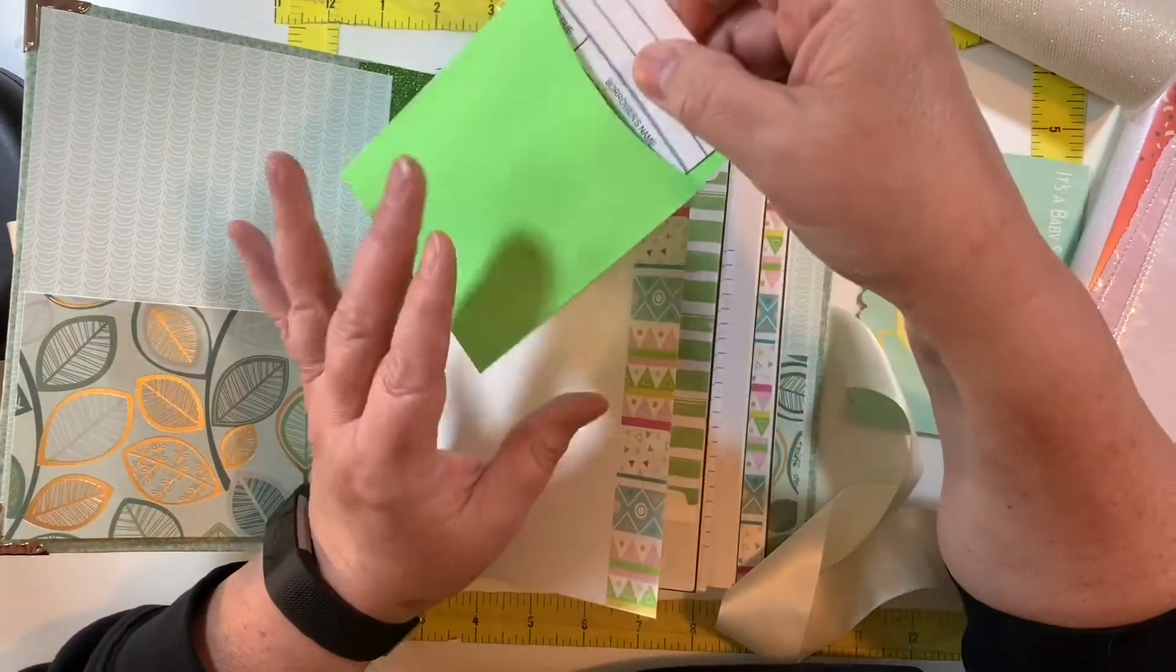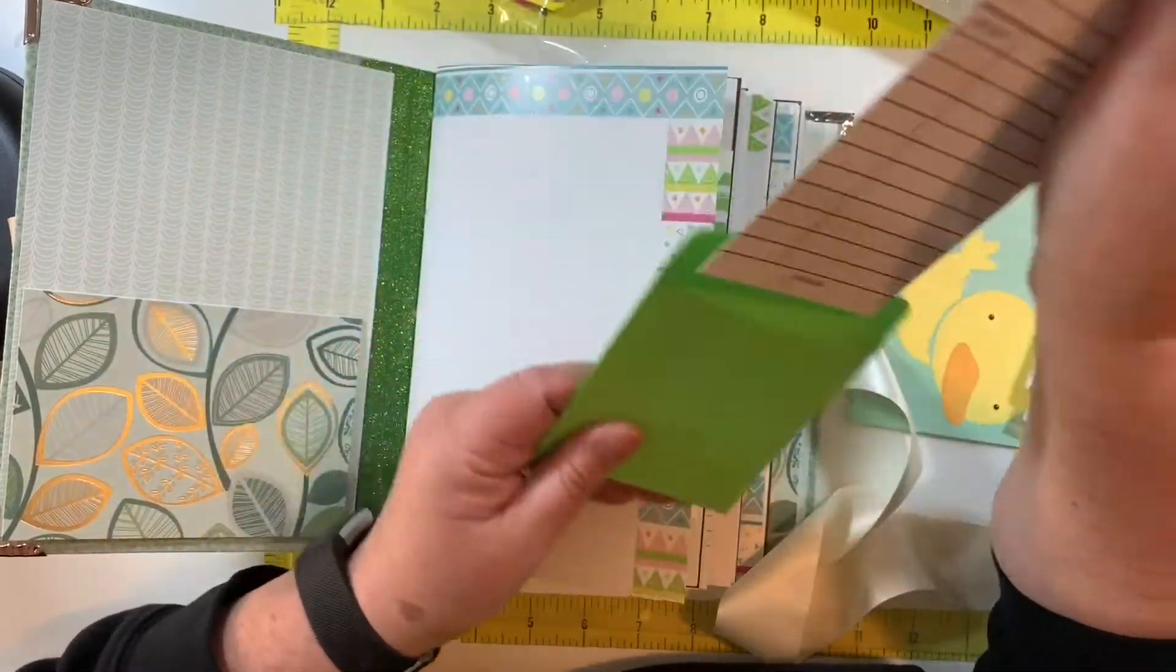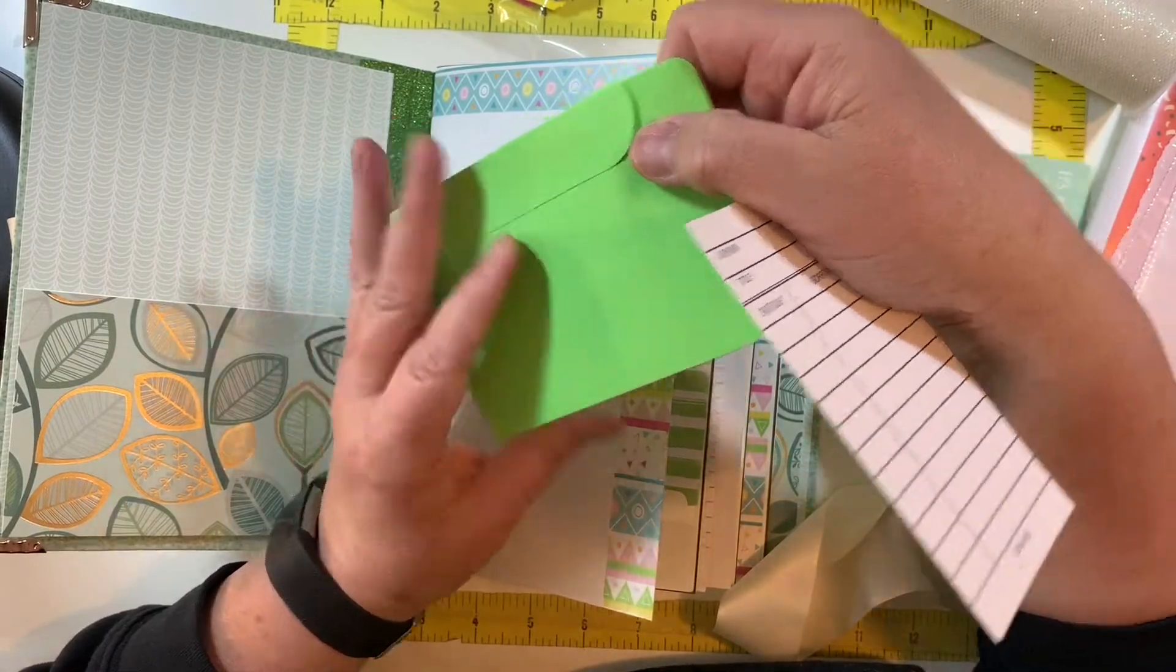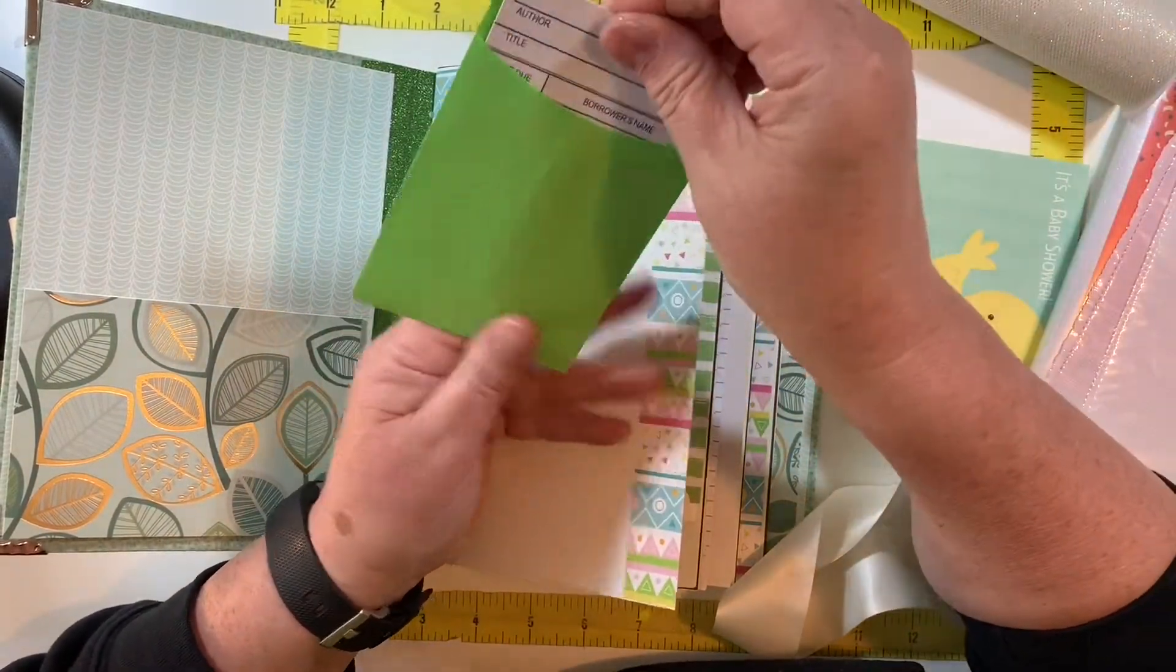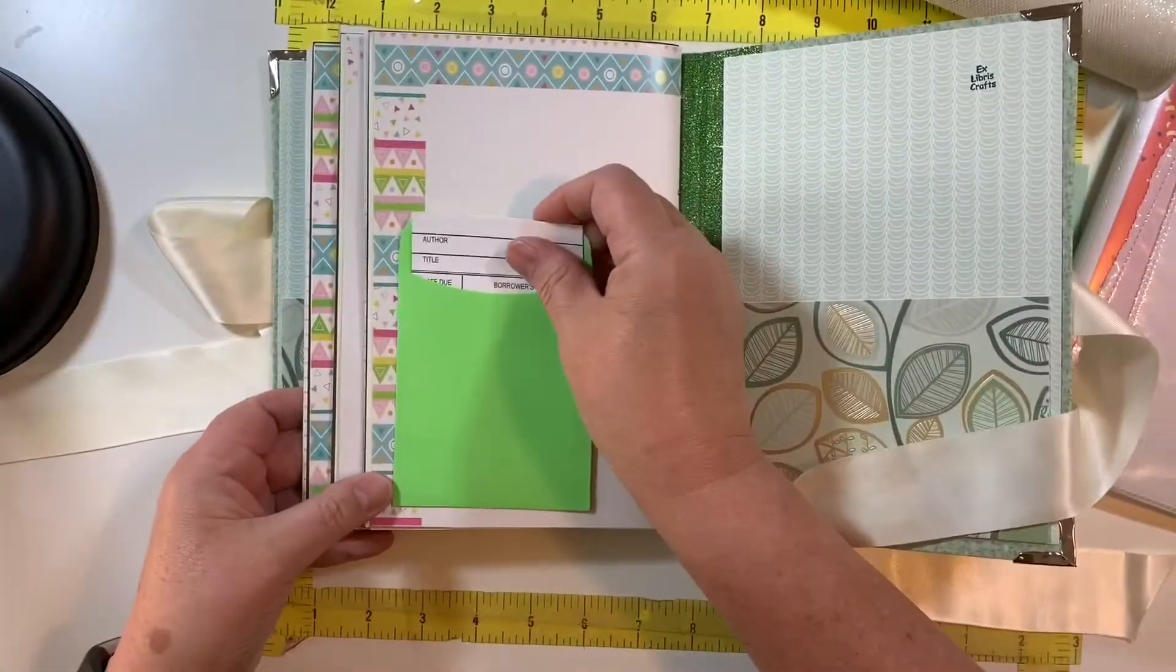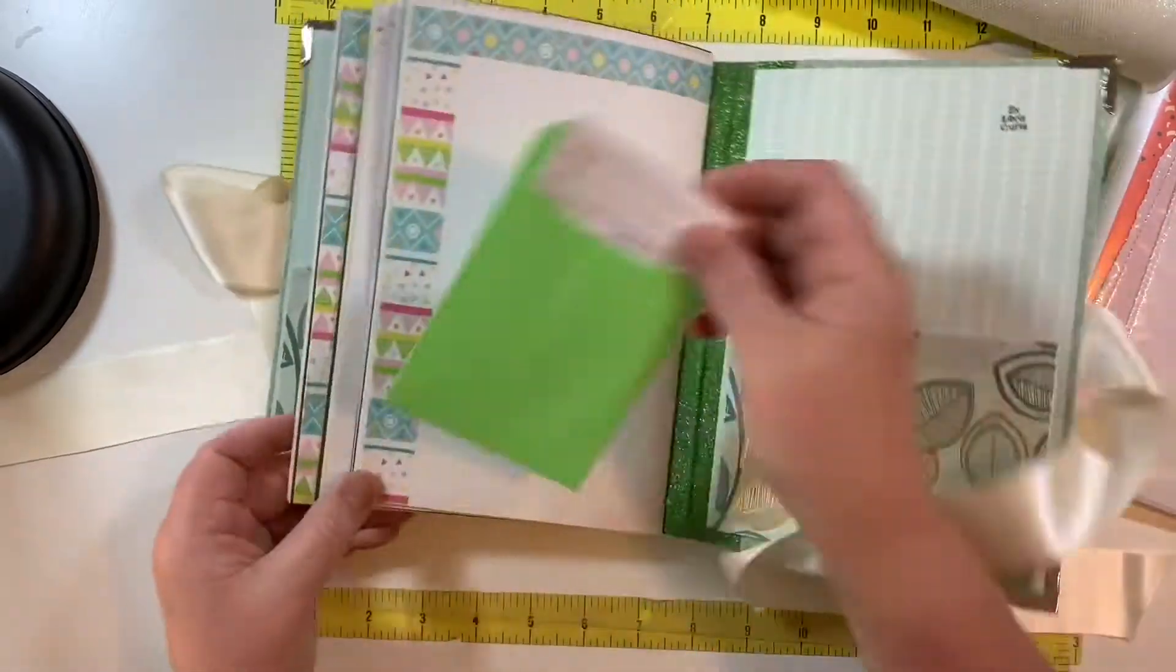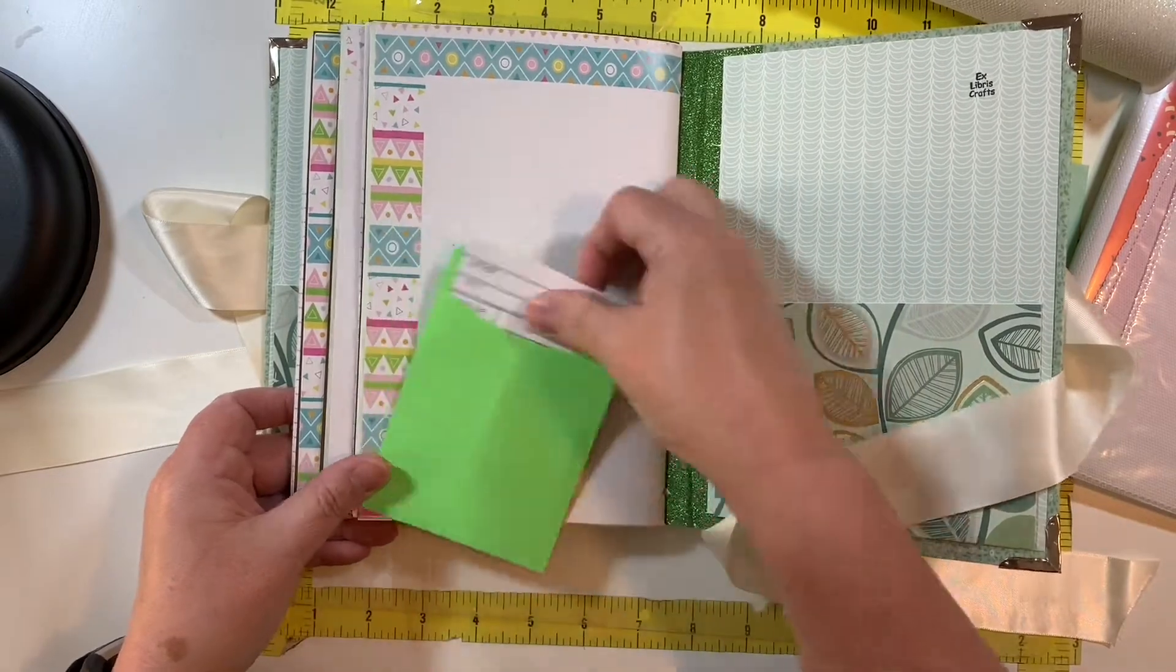And I ordered from Amazon just to see these library card pockets. Obviously easy enough to make myself, so I don't think I'll be ordering them again. But I like the color. They came in different colors. So this I'm probably going to put back here. I would put it on the front, but I have that there. So I'll probably glue this back here to the back of the last signature.